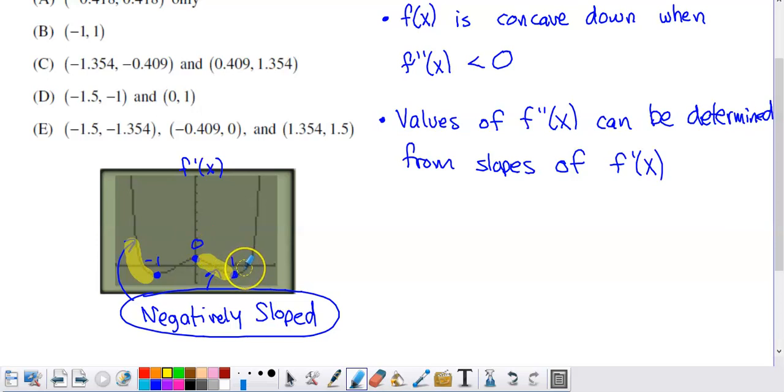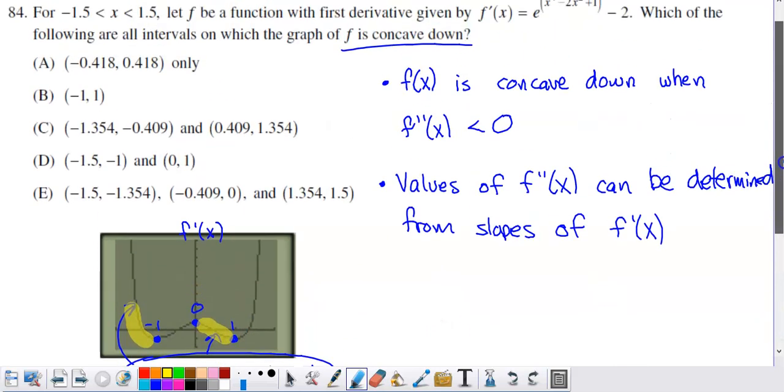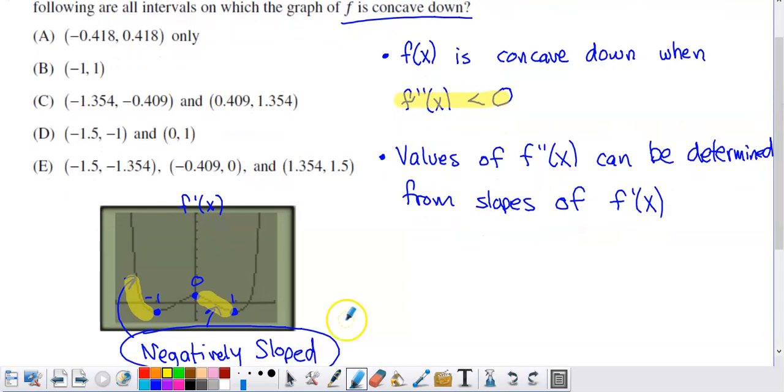What we need to know is we need to know where the intervals are where we're negatively sloped because those are the intervals where f prime is decreasing. Therefore, those are the intervals where f double prime is negative. That would be from negative 1.5 to negative 1 and from 0 to 1. So if you look at the options, option D is the one that we just got.